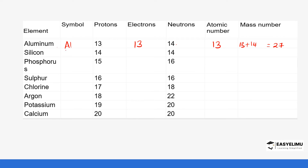Silicon has the symbol Si. Its number of protons is 14, which equals the number of electrons since it is neutral, so the atomic number is 14. The number of neutrons is also 14, so the mass number is 14 plus 14, which gives us 28.